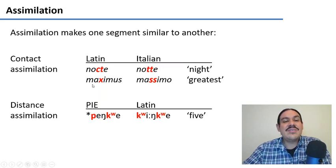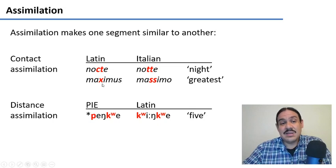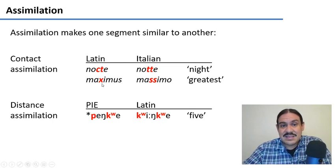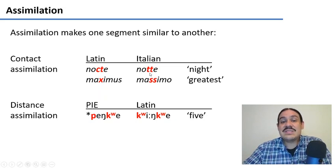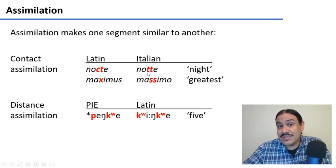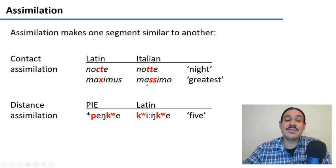Here we have 'Maximus', meaning 'greatest' in Latin. We have a K and an S, but the final S influenced the K and made it another S — 'Massimo', greatest. This is called contact assimilation, because these two sounds are touching one another, right next to one another.